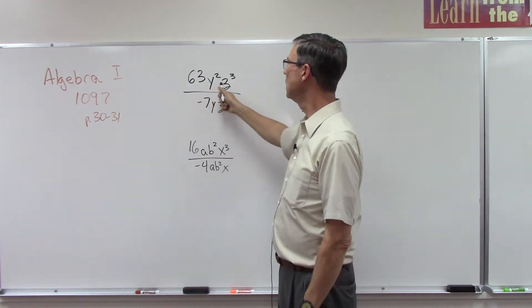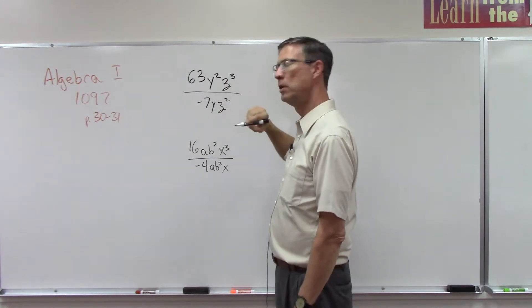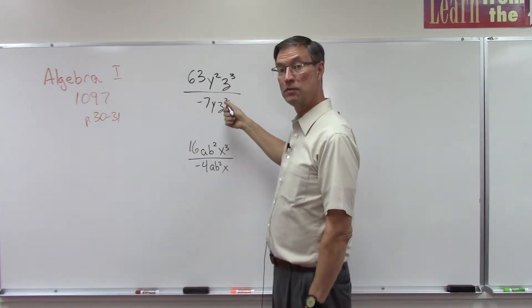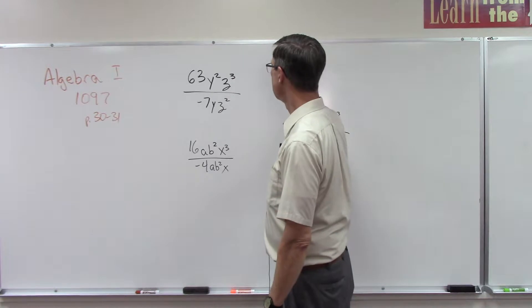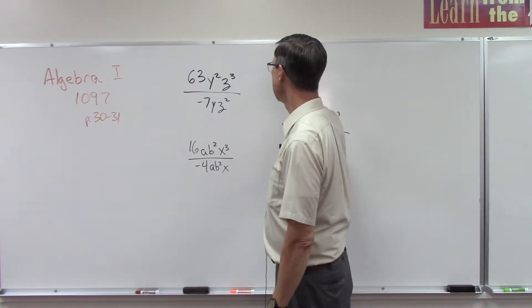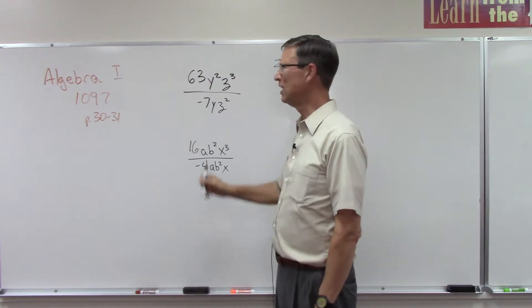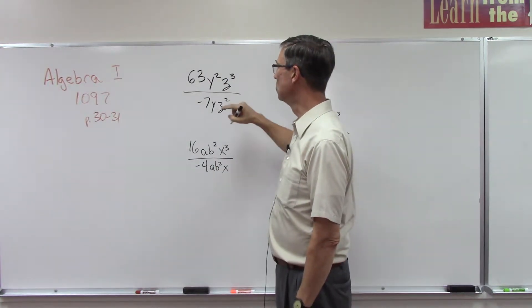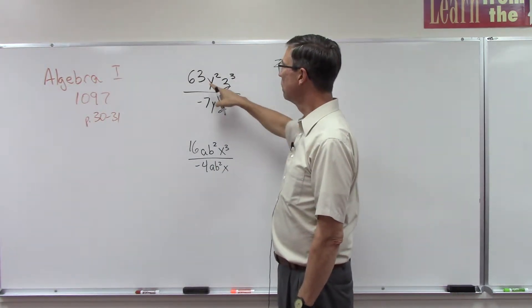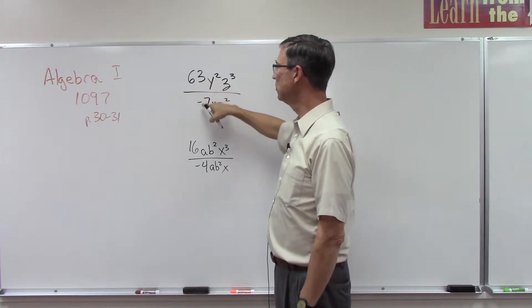63y²z³. Notice how I do a cursive z? If I try to draw a z like that, it tends to look like a 2 and gets confusing, so I try to get in the habit of drawing my z's like a cursive z. So the first step is we're going to take 63 and divide by -7.